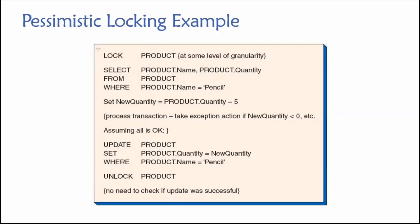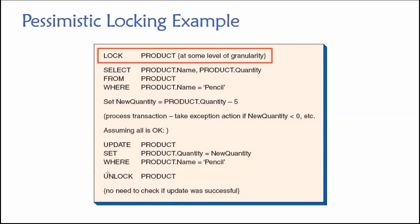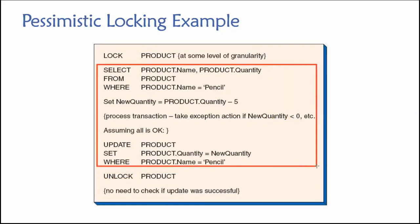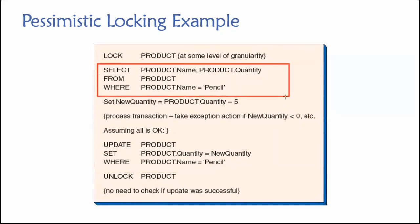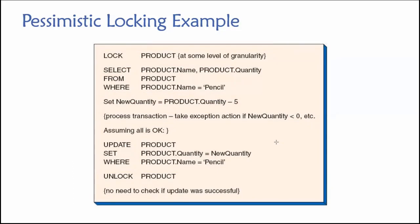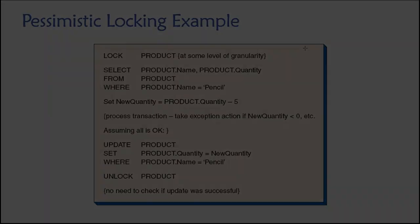Remember that with pessimistic locking, we can potentially slow down the overall throughput of the database — its ability to process all of the incoming requests — because we are always issuing locks. And if someone else needs to use these data at the same time, even if it's just a read and they're not changing anything, they will not be able to — they'll have to wait. You can multiply that over thousands of users and you can see how it might slow things down.